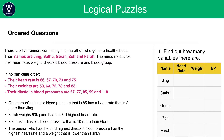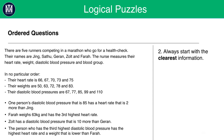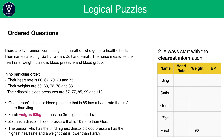Hopefully you would have used a similar method for this question. Now, what we need to do next is always start with the clearest information. This refers to any information that isn't vague and gives us information we can put directly into our table without having to carry out any further calculations. We are told in the second line that Farah weighs 63 kilograms and has the third highest heart rate. In our table we can put that Farah has a weight of 63, and we can put the fact that she has the third highest heart rate — which is 70, given the smallest heart rate is 66 and the largest is 75.